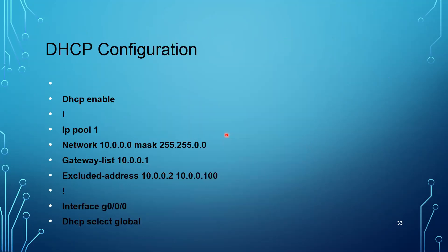Here I'll explain how to configure a Huawei router to work as a DHCP server. First, log into the router and type 'dhcp enable' to enable DHCP. Then create a pool of IP addresses to distribute from: 'ip pool 1', then 'network 10.0.0.0' with mask '255.255.0.0'. Specify the default gateway with 'gateway-list 10.0.0.1'. If there are IP addresses you don't want to distribute — like those statically assigned to servers — use the exclusion command.